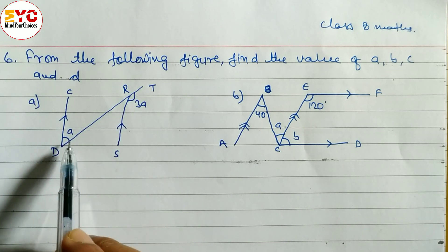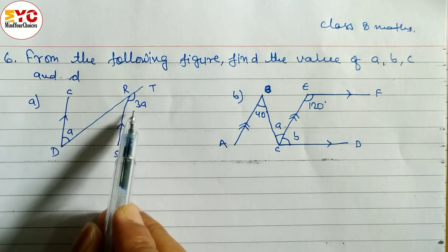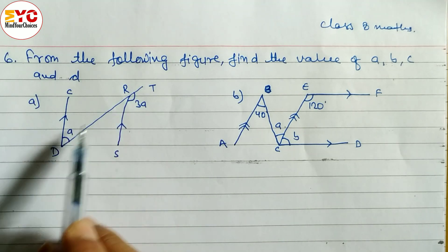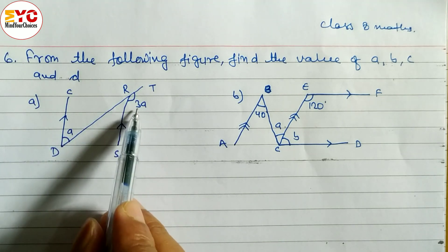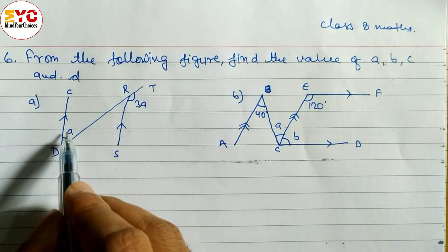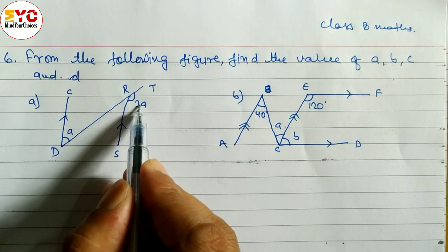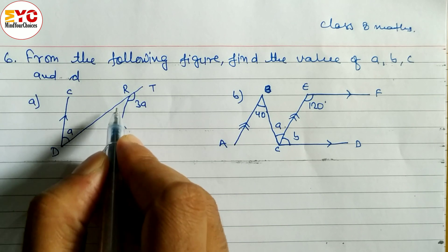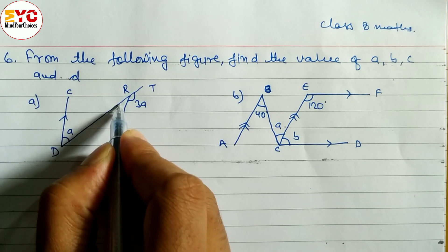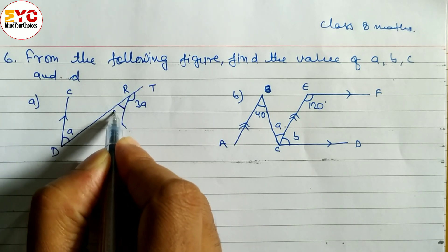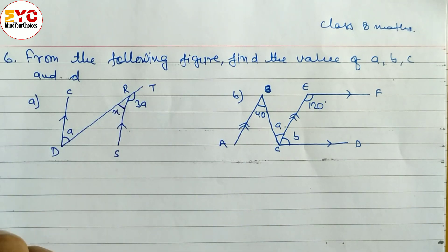We have to find out the value of x. Here is 3, here we have to find out the value of a, here is 3a and here is a. What is the relation of 3a and a? We don't have any relation, so we can let here something. Suppose here is x.